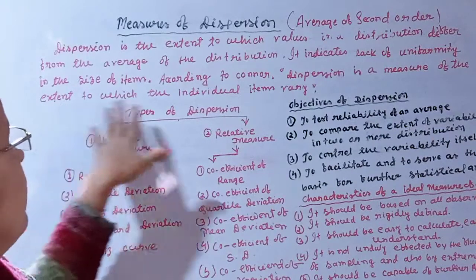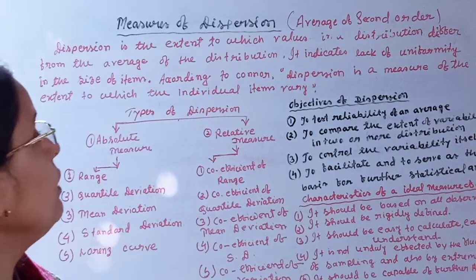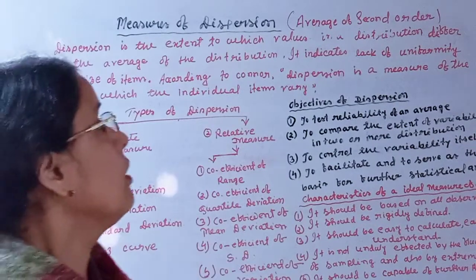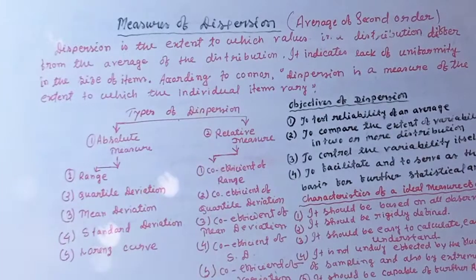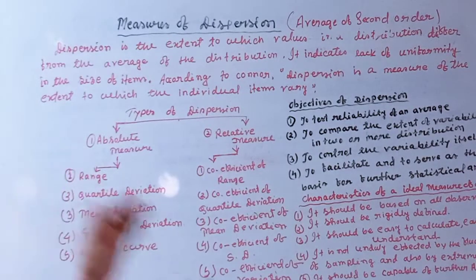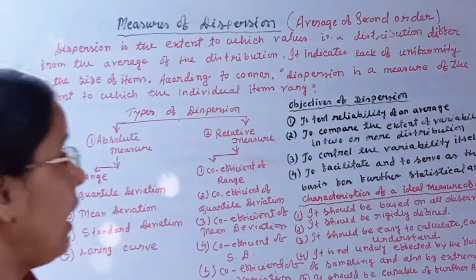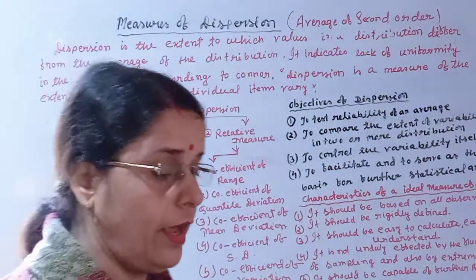The distribution of dispersion is the extent to which individual items vary from one another.